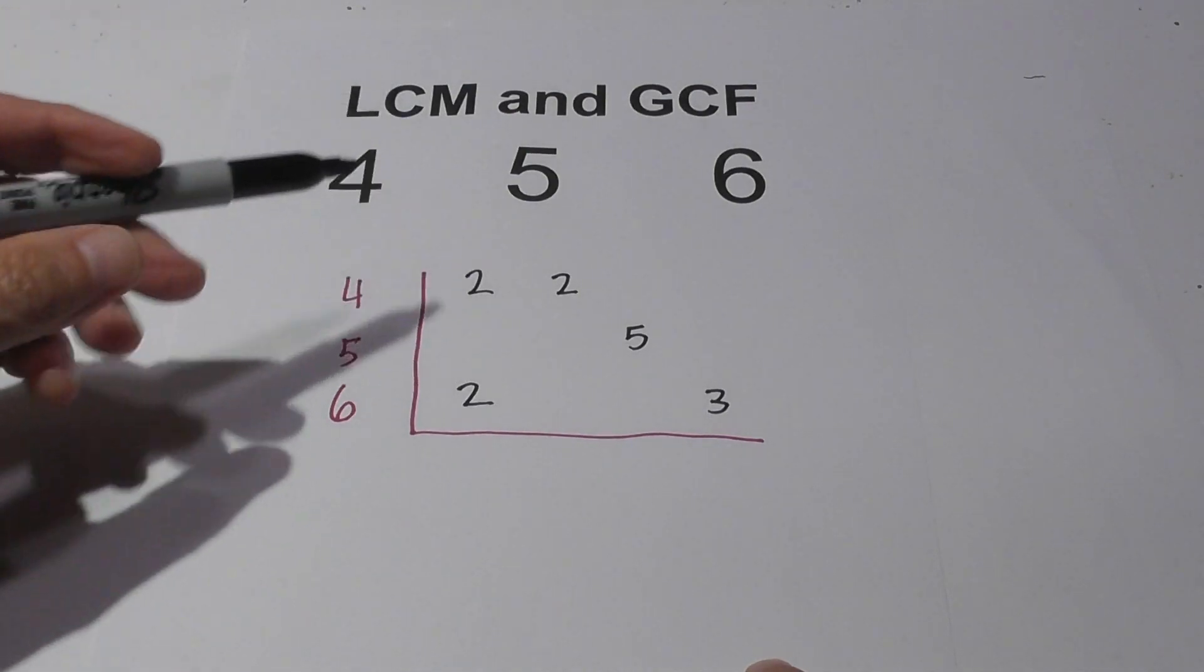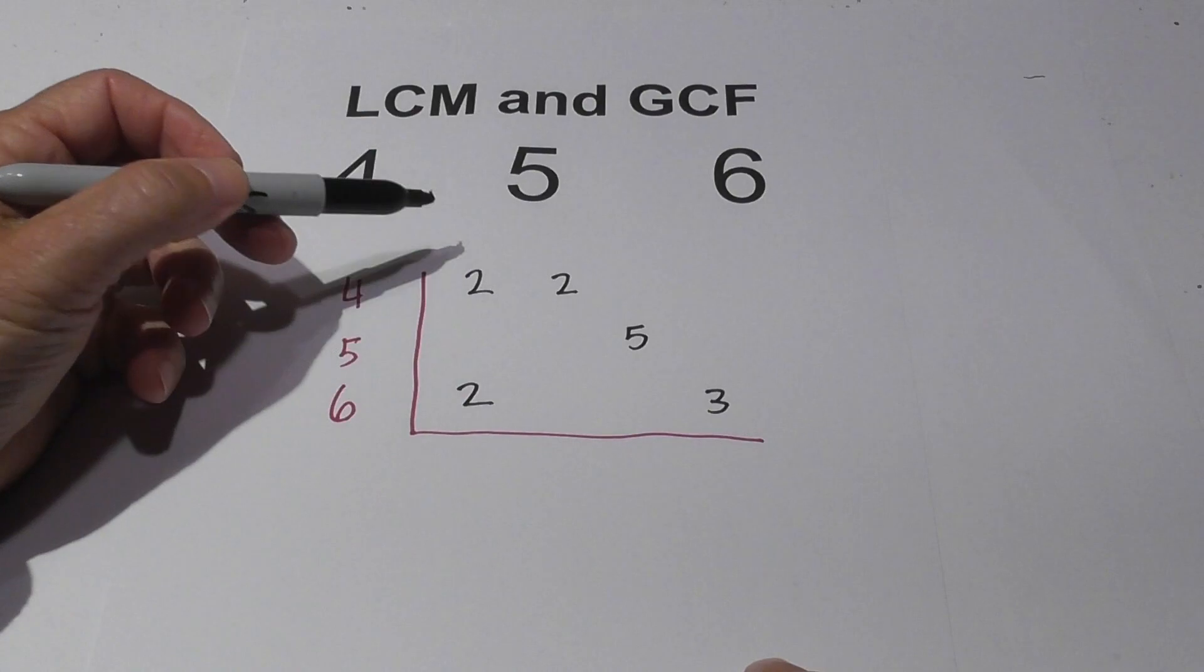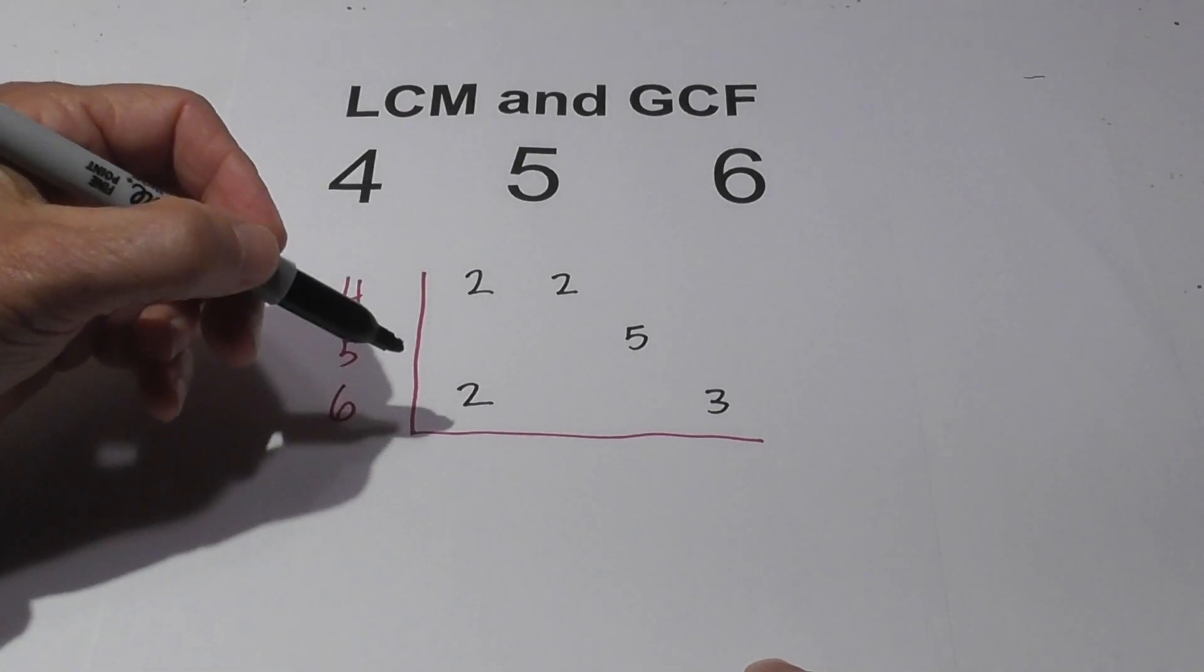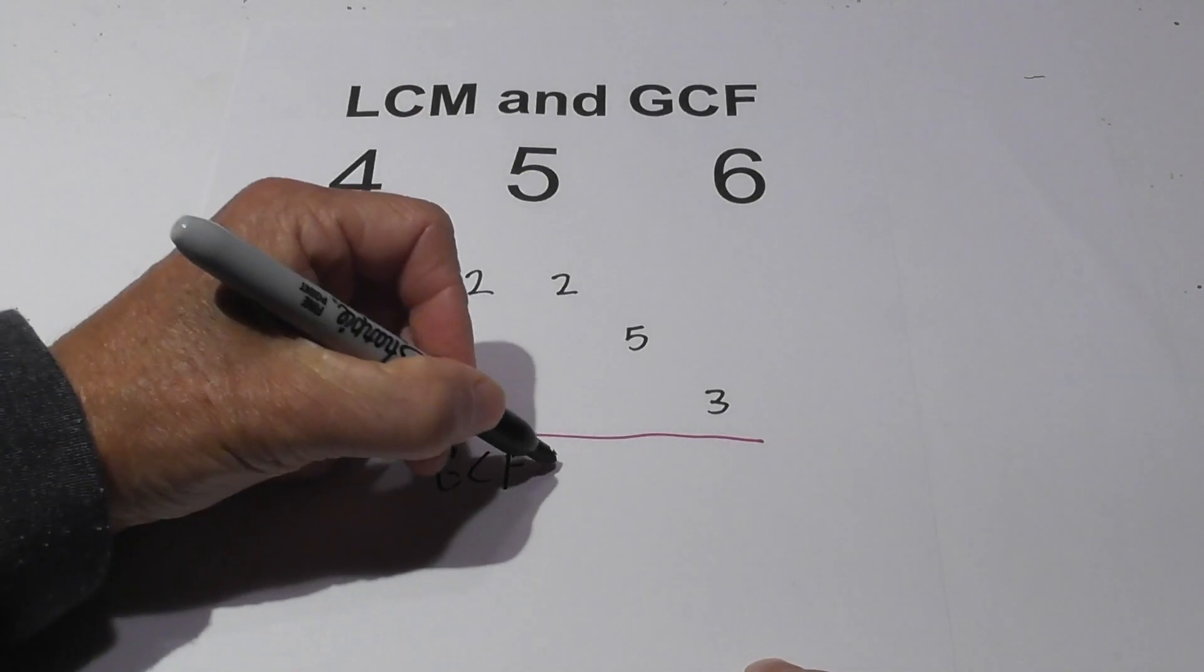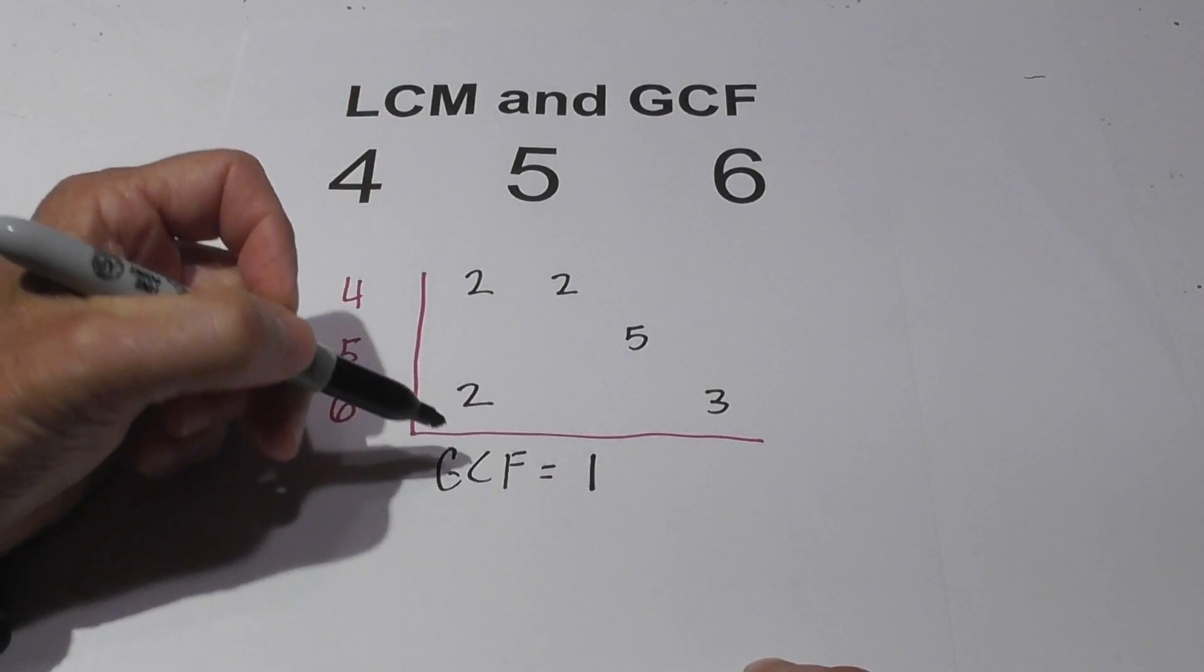So in this case, there is no prime factor that's found in all three, so the GCF will equal 1. Okay, so the GCF is 1.